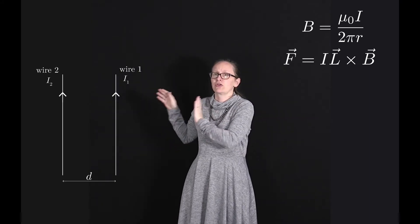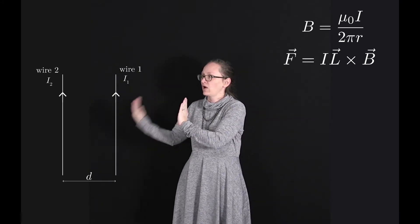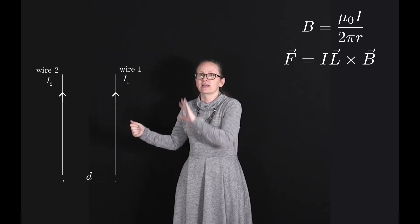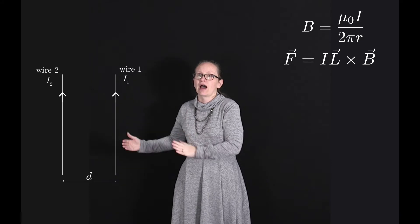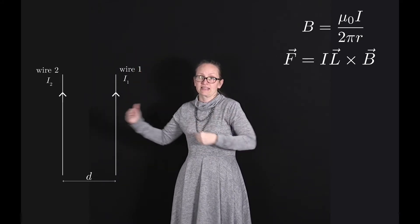So I want you to picture wire 1 and wire 2. They're both carrying a current, wire 1 current i₁ and wire 2 current i₂ up the screen, and they're separated by a distance d.